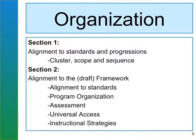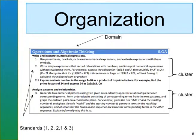Then we will move into section two — alignment to the draft frameworks — which looks at alignments to standards, program organizations, assessments, universal access, and instructional strategies. As we look at the organization, remember that we are looking at clusters and the scope and sequence. For example, Operations and Algebraic Thinking, fifth grade OA: writing and interpreting numerical expressions are the clusters, and standards 1, 2, 2.1 are the important clusters for that particular standard. Then analyzing patterns and relationships is the second set of clusters.